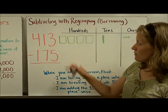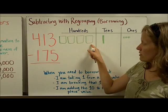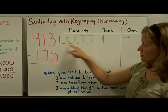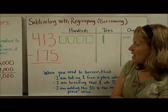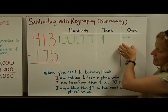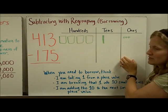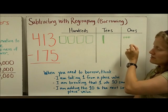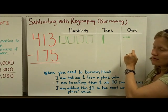I've drawn here 413, four hundreds, one ten, and three ones. And I need to start by taking out five ones from this column. Well, I don't have five ones to take away, I only have three ones to take away.